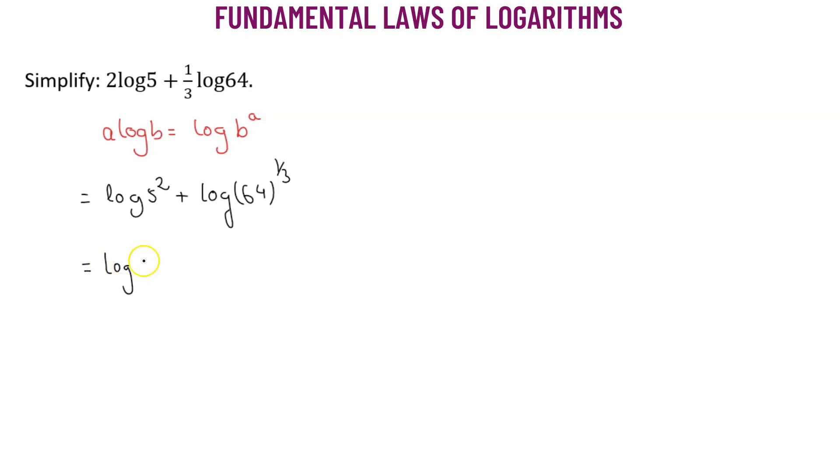That means we have log of 5 squared, which is 25, plus log of the cube root of 64. So cube root of 64 is simply 4.